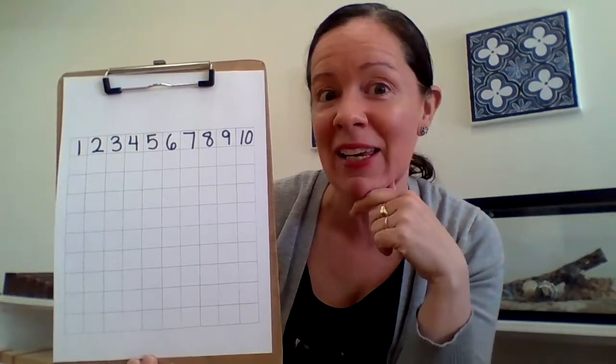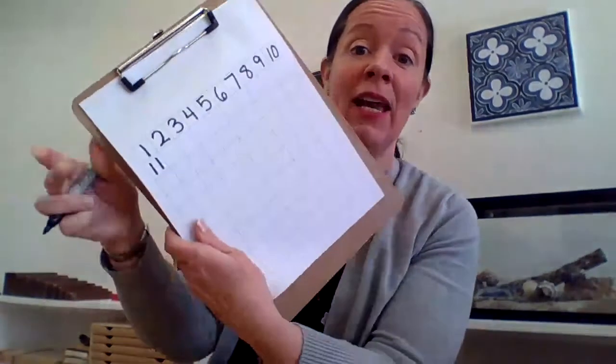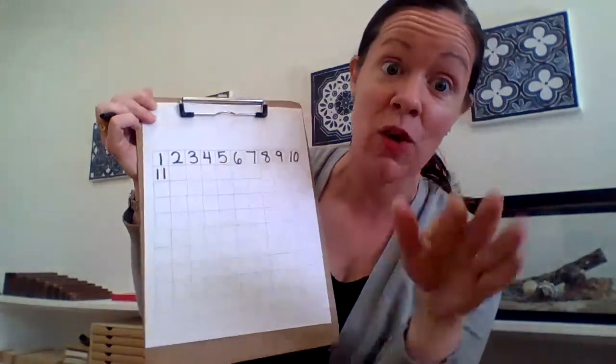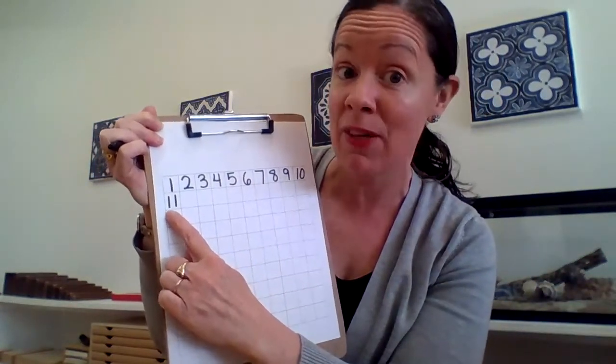So what comes after 10? 11, right. So the next row are going to be the teen numbers. So if you've worked with the teens board in the classroom you would know that your next number is 11. And in the teens remember the 1 comes first because it's showing you that it's 10, and then another number. Like 11 is 10 and 1. Think of the teen boards, right?